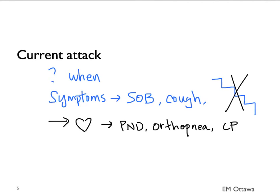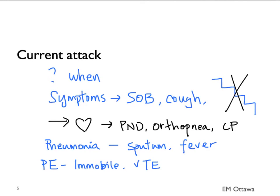Then we want to ask about the trigger questions. For pneumonia, we want to ask about fever, chills, change the color of sputum, or increase sputum production. For PE, we will ask about immobilization, previous venous thromboembolism, and so on. For pneumothorax, we need to ask whether the shortness of breath happened abruptly.